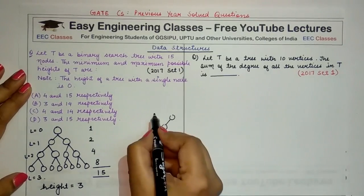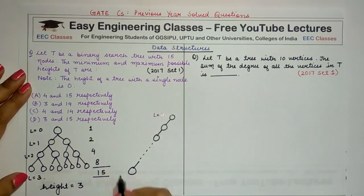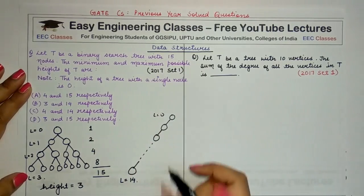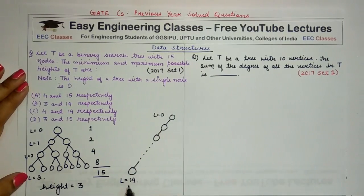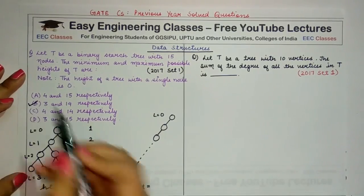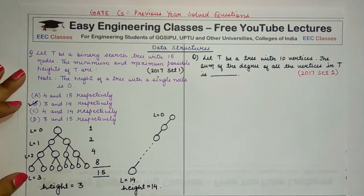And since level is starting from zero, it will continue till 14. Or you can draw the same tree but each node as the right node. So in this case, height would be 14. So the right answer in this case is 3 and 14, which is option B.